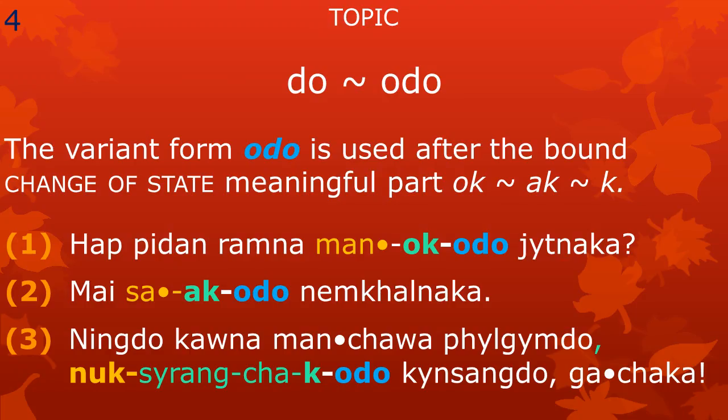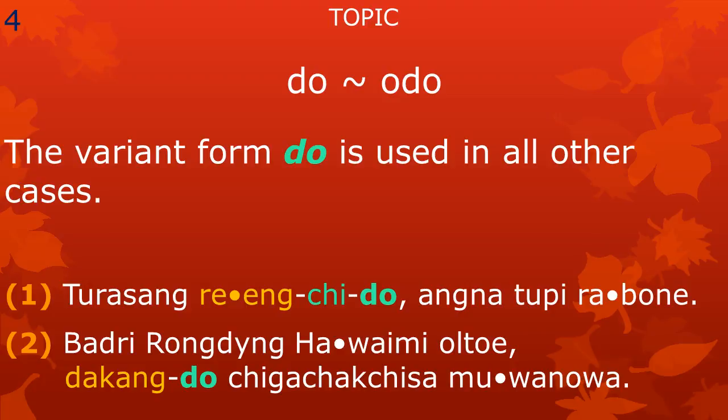The topic meaningful part has two variant forms, namely do and odo. The variant form odo is used after the bound change of state meaningful part oq, ak, and te. The variant form do is used in all other cases — that means when the preceding meaningful part is not the change of state. Here are two example sentences: one, Tura sangra inchido angna tupi ra'bo ne? Two, Badiri rongdung hawai mi ultoe, takang do chigachak tisham uanu.